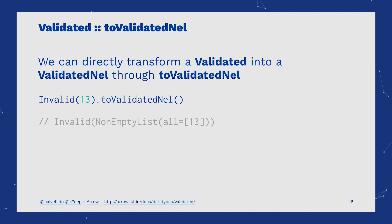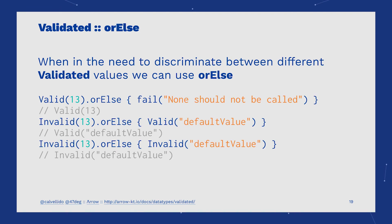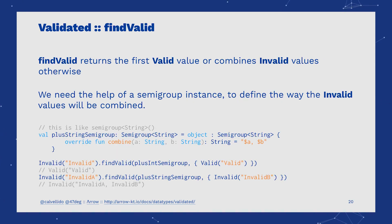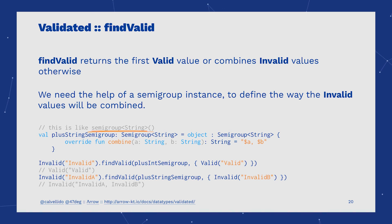Through ValidatedNel, we are able to transform a Validated into a ValidatedNel. Given that we are in an Invalid case, we can access all the benefits from the non-empty list data type. The operator orElse allows us to select between distinct Validated values — with it, only the value on the right is preserved and the one on the left is ignored. With findValid, we can also discriminate different Validated values, similar to orElse, except that here failures are accumulated. The type held in the Invalid value should be of the Semigroup type class, as these failures are accumulated through the combine function defined by the Semigroup.